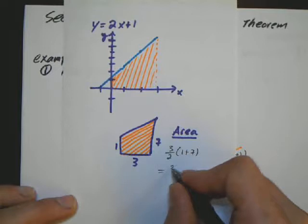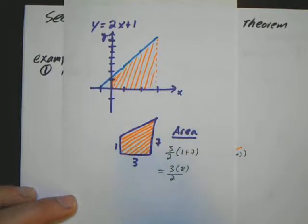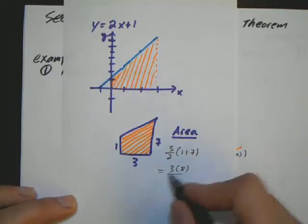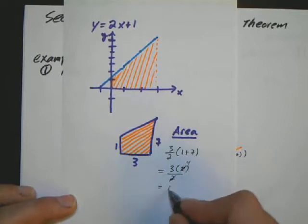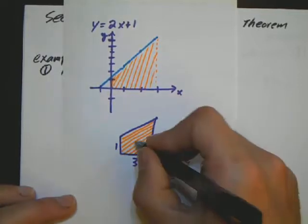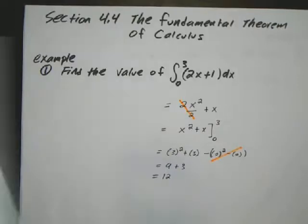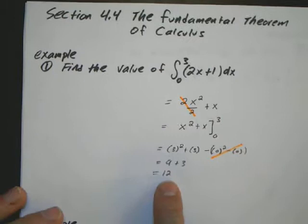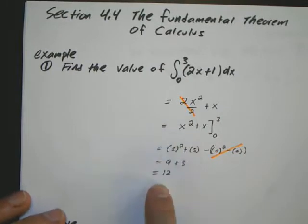This is going to be 3 over 2 times 8, which just simplifies to 12. So the area graphically, I can just find what the trapezoid is, which is 12. Or I can just use the fundamental theorem, find antiderivatives, and get the same number.